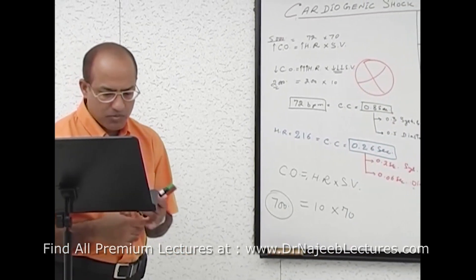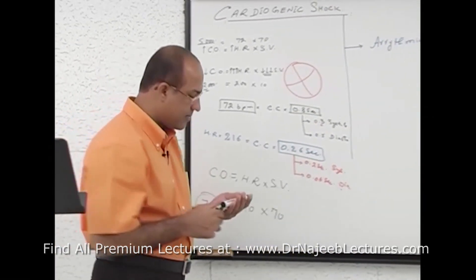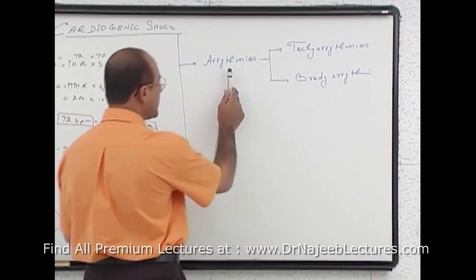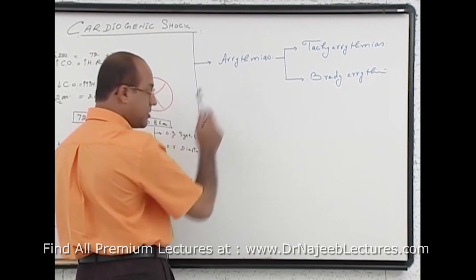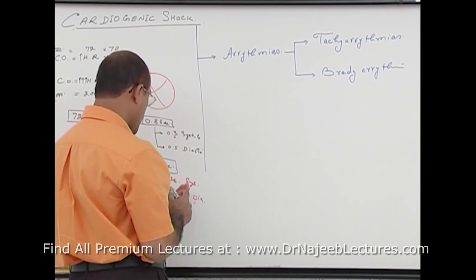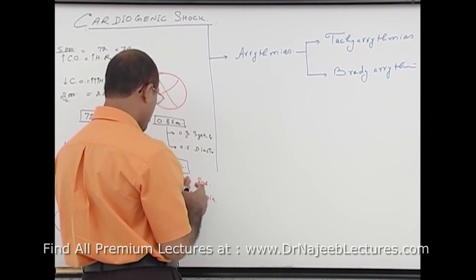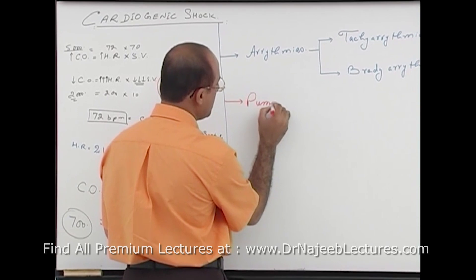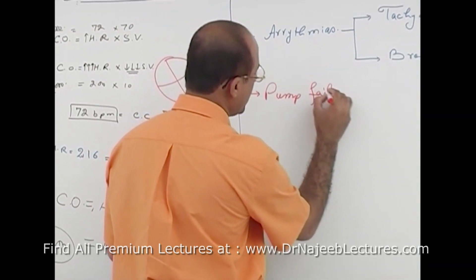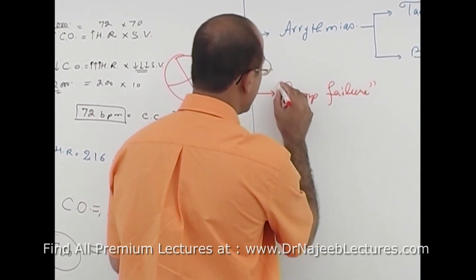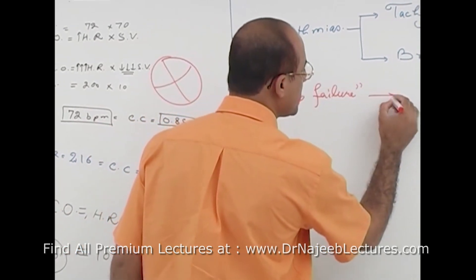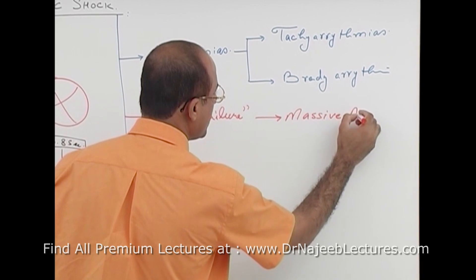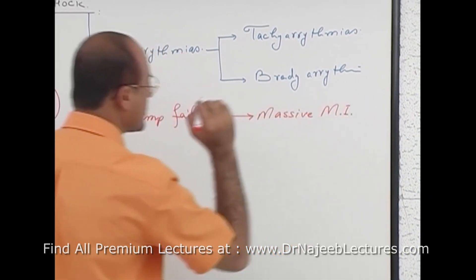So both very severe tachyarrhythmias and very severe bradyarrhythmias can precipitate cardiogenic shock by reducing cardiac output to dangerously low levels. Now we come to true pump failure — where the problem is not with the rhythm. The classical example is massive myocardial infarction.